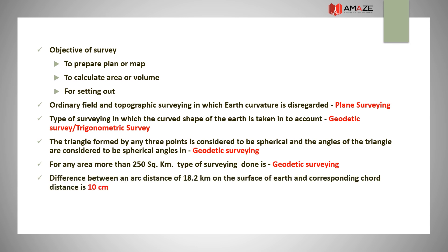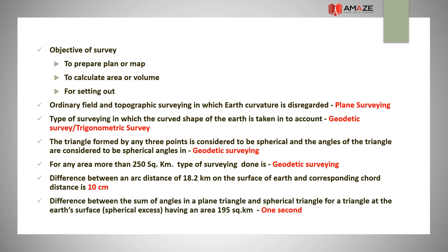The difference between an arc distance of 18.2 km on the surface of the earth and the corresponding chord distance is 10 cm. The difference between the sum of angles in a plane triangle and a spherical triangle, for a triangle at the earth's surface having an area of 195 km², is 1 second — this is called the spherical excess.